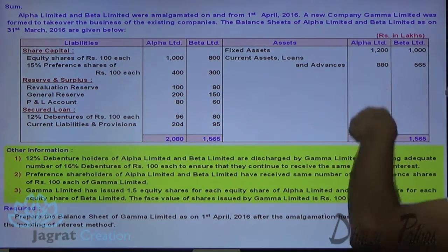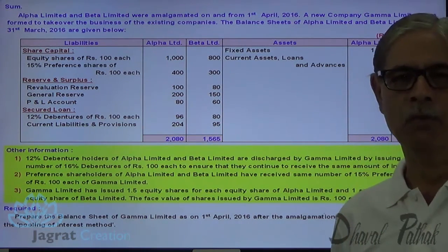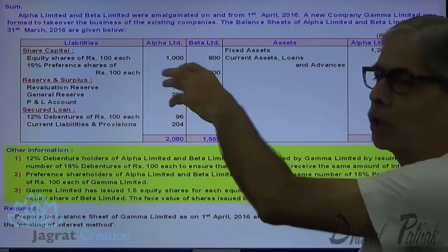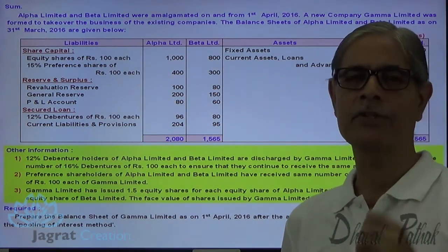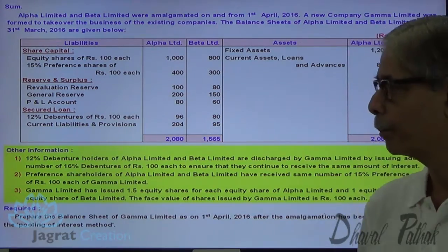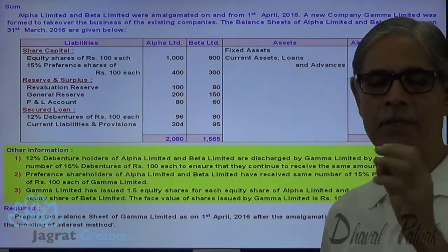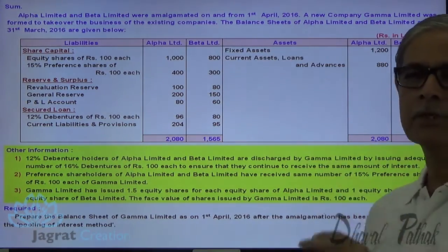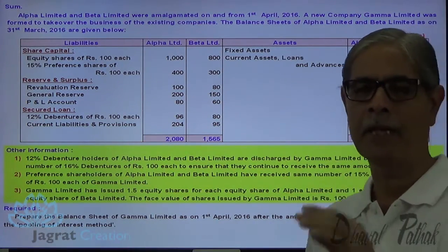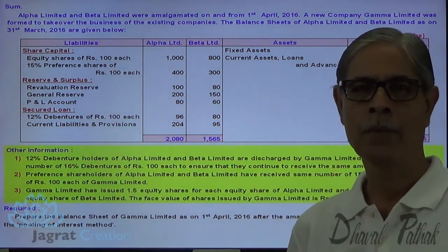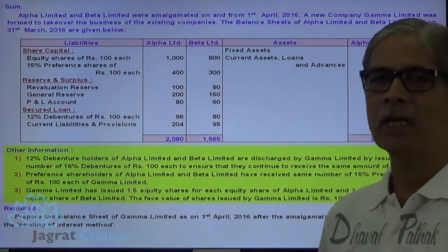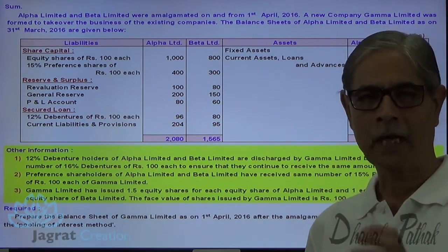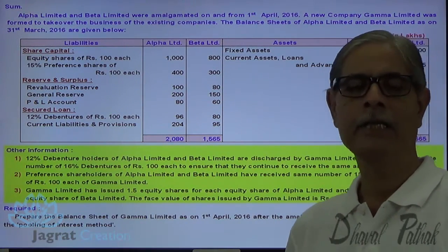Notice that assets and liabilities are not revalued. All shareholders of the vendor company are going to become shareholders of the purchasing company. Payment is made by the purchaser company in the form of equity shares. After amalgamation, the business of Alpha and Beta Limited will continue to be carried on.